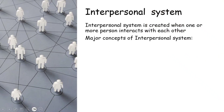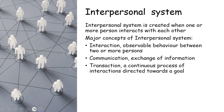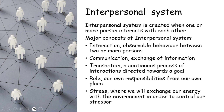To summarize, the interpersonal system is created when one or more persons interact with each other. Its major concepts are: interaction — observable behavior between two or more persons; communication — exchange of information; transaction — a continuous process of interactions directed towards a goal; role — our own responsibilities with a give-and-take relationship; and stress — where we exchange energy with the environment to control our stressors, which is dynamic in nature.